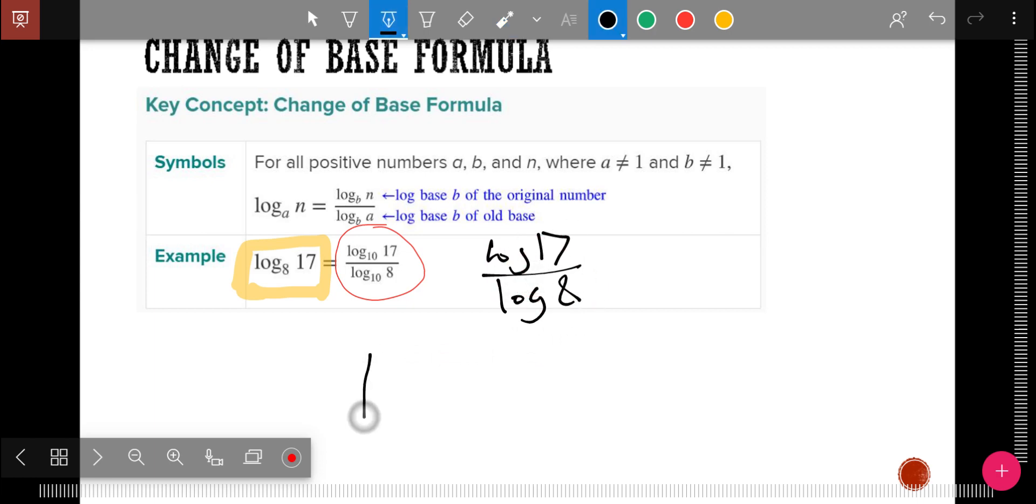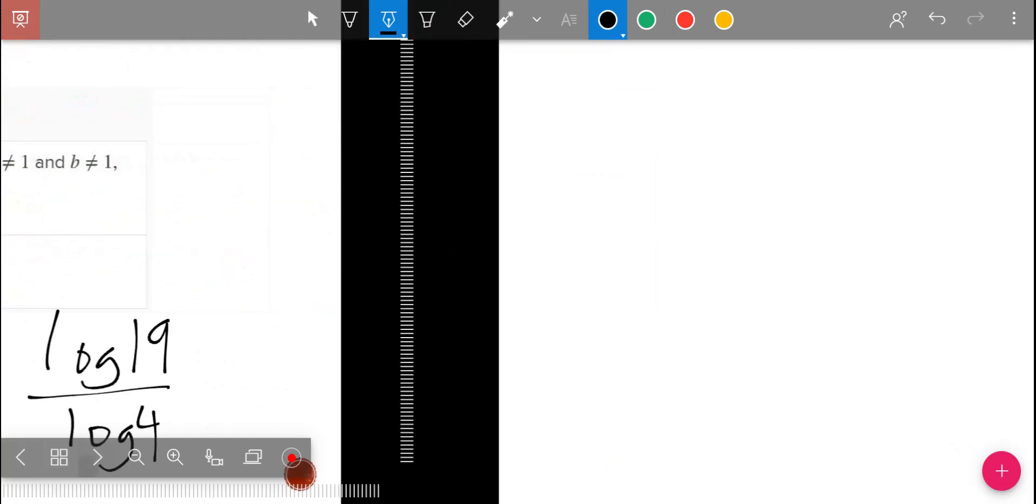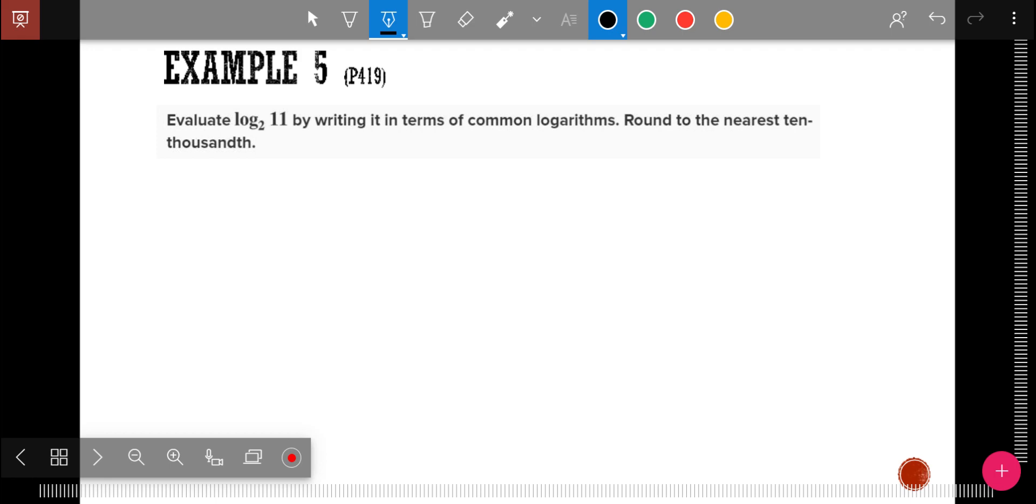Another example would be if I have log base 4 of 19, then I would simply do log 19 divided by log 4. Type that into a calculator, I get 2.12. And so the last parts of your homework are going to be evaluating common logs by using the change of base formula. So this one becomes log 11 over log 2. Again, I take this, this is what they gave me, and I changed it, changed the basis so I can use the calculator. These are now both base 10. I just don't write the 10 in because if I don't write the 10 in, it's automatically a 10.